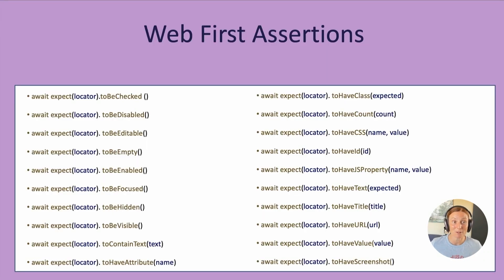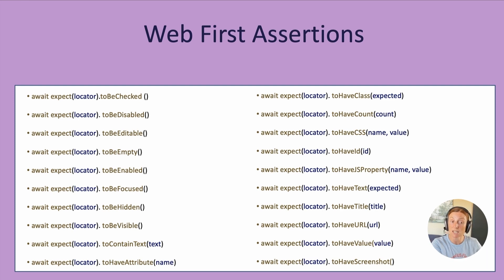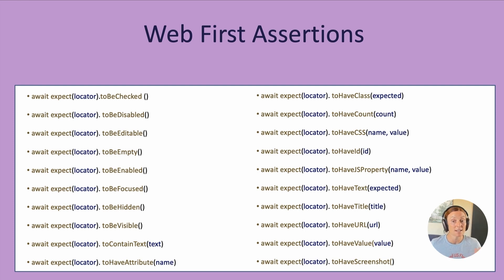Make sure you're using web-first assertions. We have a lot of assertions: expect a locator to be checked, disabled, editable, empty, enabled, focused, hidden, visible, to contain text, to have attributes, class, count, CSS, ID, JS property, text, title, URL, value, screenshot, and so much more. Check the web-first assertions docs — that's going to really help you write better tests.